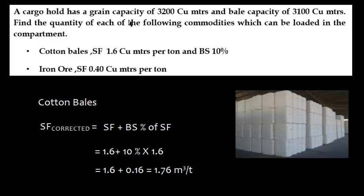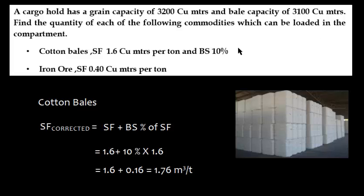A cargo hold has a grain capacity of 3,200 cubic meters and a bale capacity of 3,100 cubic meters. The difference is that grain capacity is the total internal volume, while bale capacity applies when cargo is packaged. We need to find the quantity of each commodity that can be loaded in the compartment.